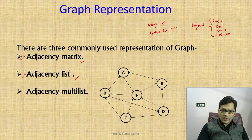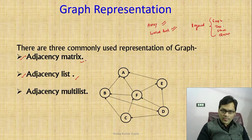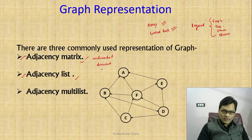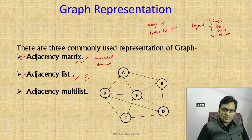We will discuss one by one: adjacency matrix. In the previous video we saw that a graph is basically of three types: directed graph, undirected graph, and weighted graph. We will make adjacency matrices for undirected graph, directed graph, and weighted graph. Similarly, adjacency lists for undirected, directed, and weighted graphs, and one more — adjacency multilist. Let's start with adjacency matrix.